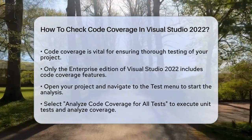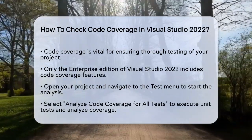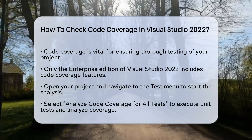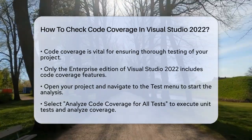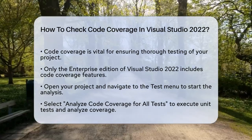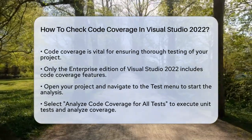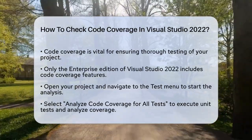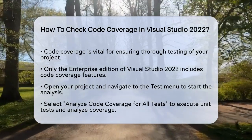Let's figure out how to check code coverage in Visual Studio 2022. First, you need to be using the right version of Visual Studio. Code coverage features are only available in the Enterprise Edition of Visual Studio 2022. To get started, open your project in Visual Studio and navigate to the Test menu, where you can select 'Analyze Code Coverage for All Tests' to run the code coverage analysis.